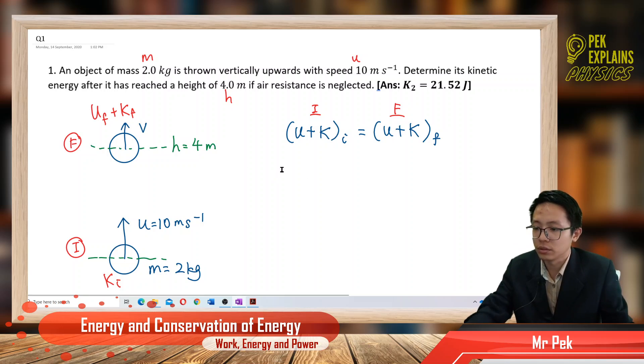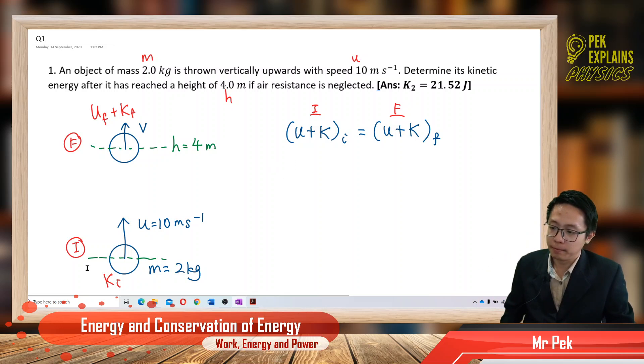Some part of the initial kinetic energy has turned to the gravitational potential energy. So let us use the conservation of energy to solve this problem.